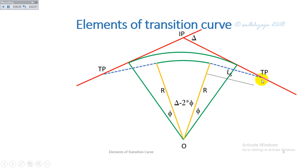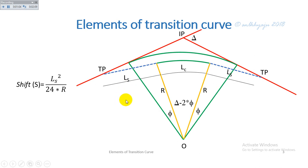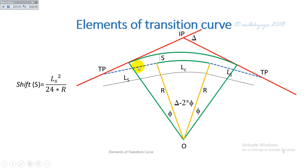This is the length of the first transition curve, the length of the circular curve, and the length of the second transition curve. The shift is the distance by which the circular curve moves inward when a transition curve is introduced between the straight line and the circular curve. The shift S is given by L² / 24R, where L is the length of the transition curve and R is the radius of the circular curve.